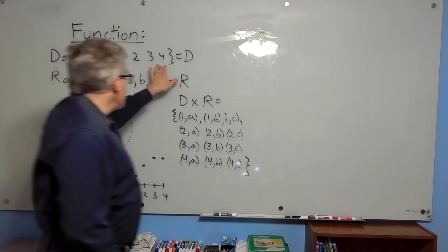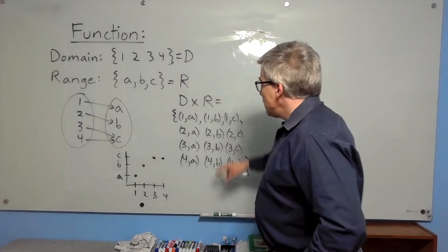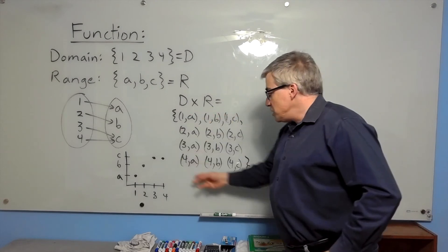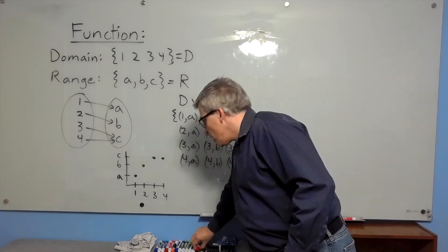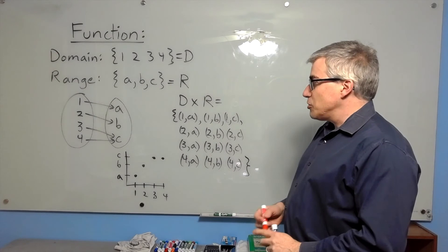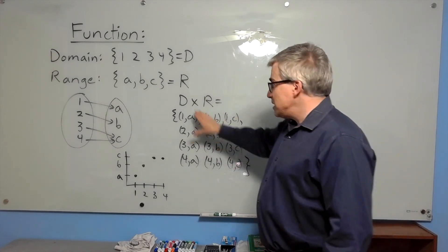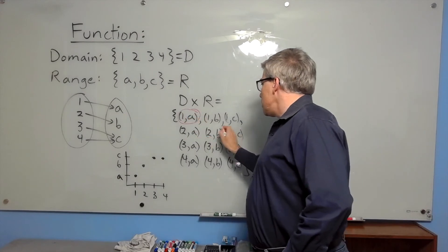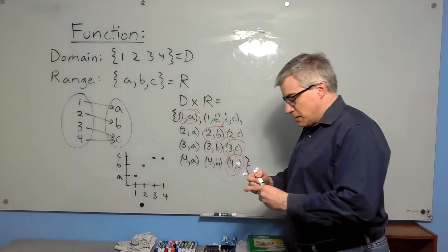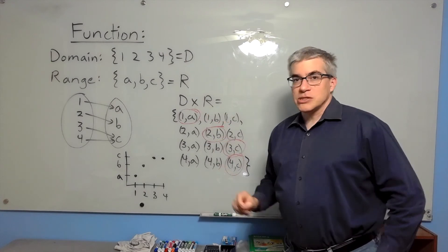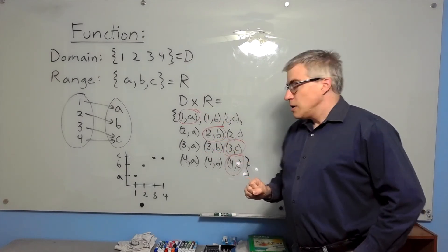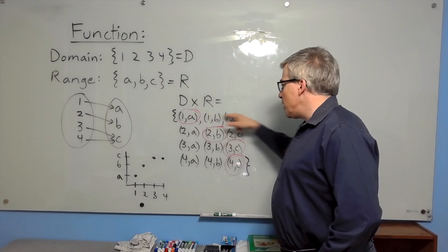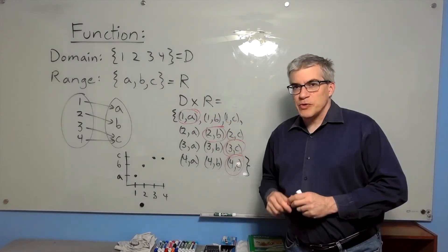If the domain is {1, 2, 3, 4} and the range is {a, b, c}, then the domain's Cartesian product with the range gives these 12 ordered pairs. A function can also be described as a subset of D cross R — specifically the pairs (1,a), (2,b), (3,c), (4,c). That part of D cross R is a function, and essentially you could get any function by picking one item from each row.